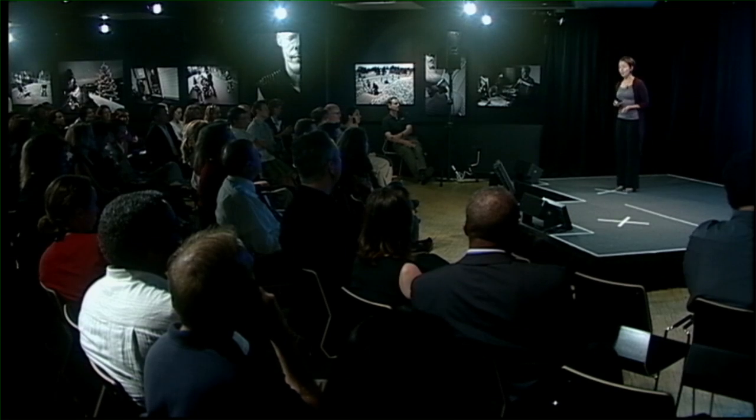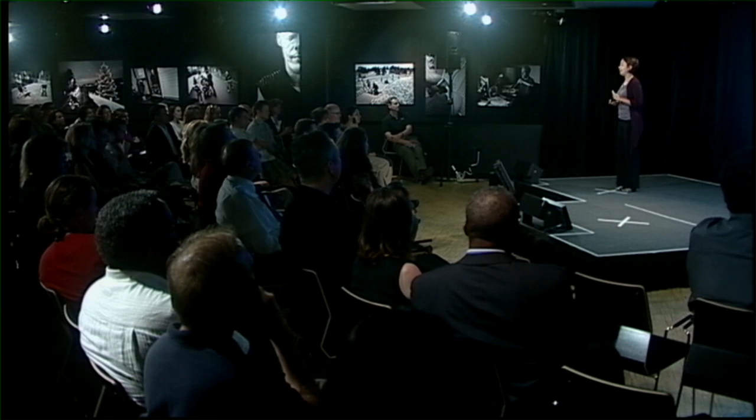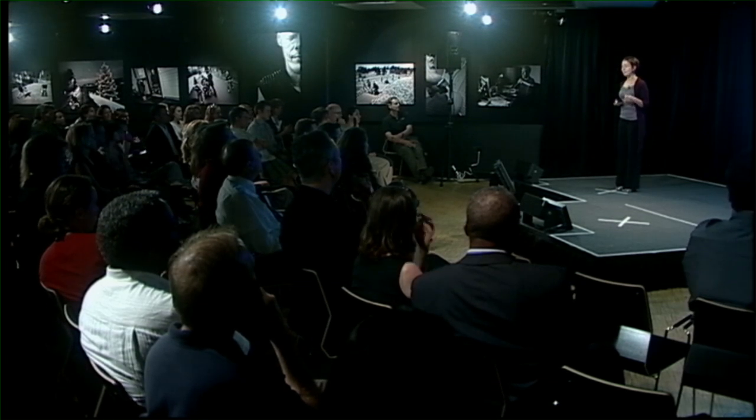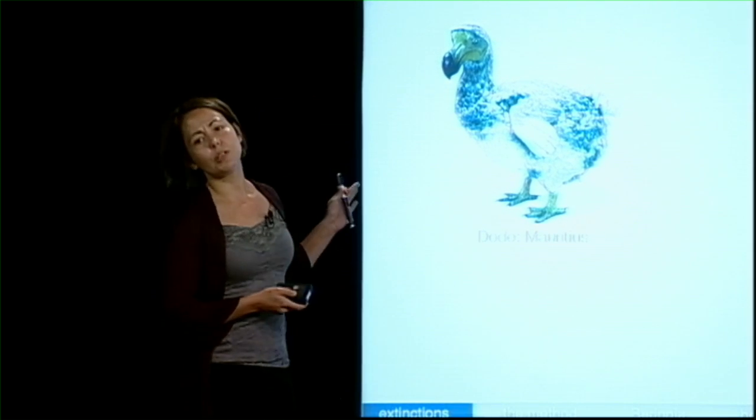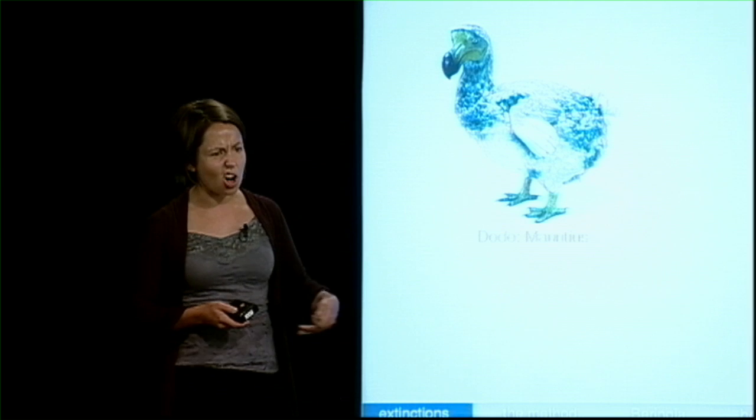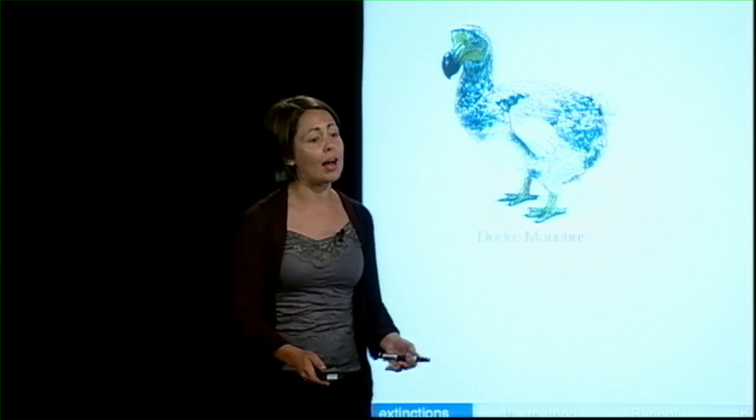It happened not because people were eating them — apparently they tasted pretty bad, according to Portuguese and Dutch sailors at the time — but because humans brought commensal organisms: pigs, dogs, and rats. Dodos nested on the ground with a single egg in a big nest, and the pigs loved that. If you can't reproduce, you're not going to survive. Being a not-very-scared, big fat bird on an island was not a good strategy for surviving humans.